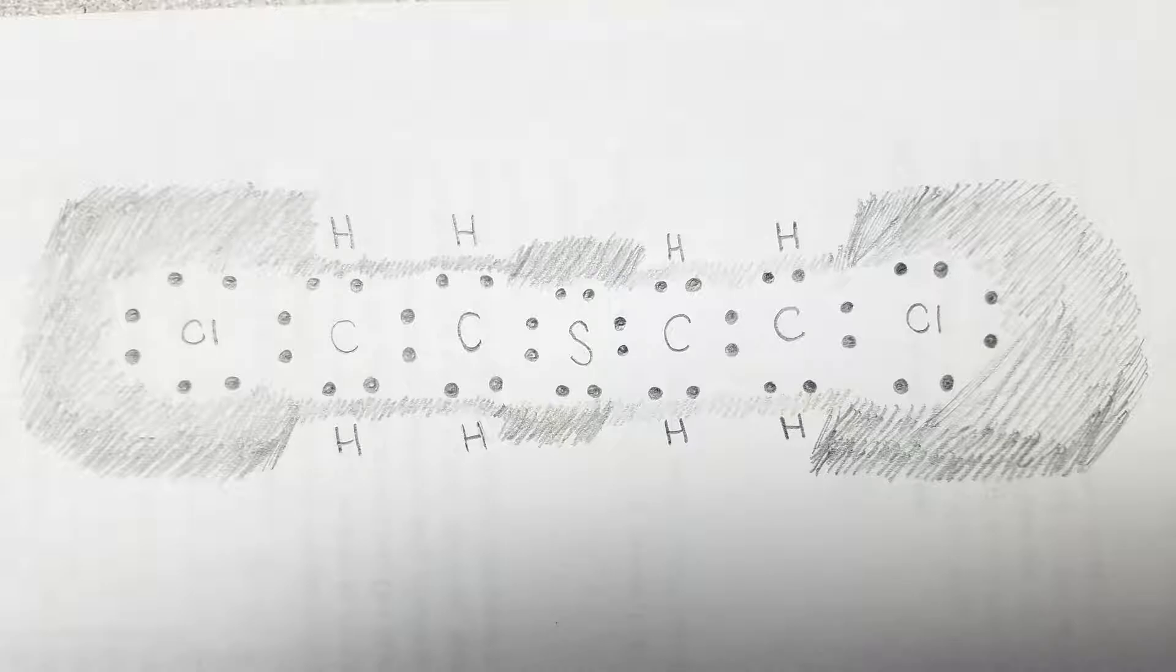Now, let's look at the shaded regions. This shading is done to represent electron density. Electron density is the probability of an electron being in a specific location. According to this diagram, there is a higher chance for electrons to be near the chlorine atoms, as well as the sulfur atom in the middle. We will talk about this more in the structure-function relationship section further on.